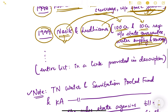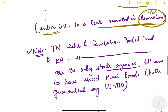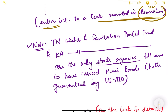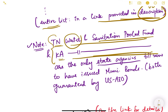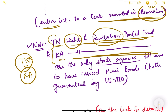There is a long history and a complete list is available via a link provided in the video description, where a PDF shows the full history of municipal bonds in India. In that list you will also find that two state agencies have issued municipal bonds: the Tamil Nadu Water and Sanitation Pool Fund and the Karnataka Water and Sanitation Pool Fund — both for water and sanitation purposes, issued by state agencies of Tamil Nadu and Karnataka respectively.